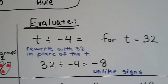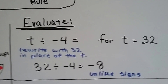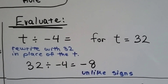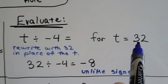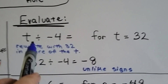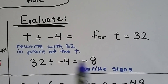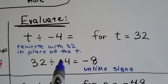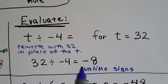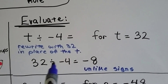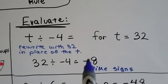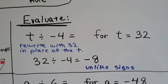If it says to evaluate and it says t divided by negative 4, and for t equals positive 32, we just rewrite that 32 in place of the t and solve it. 32 divided by negative 4 is negative 8. They've got unlike signs, so our answer is going to be negative.